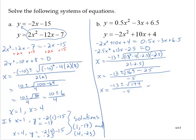So x equals negative 13 plus or minus 12 over negative 5. Negative 13 minus 12 is negative 25, over negative 5 is positive 5. Negative 13 plus 12 is negative 1, and negative 1 over negative 5 is 0.2. So x equals 5 and x equals 0.2.